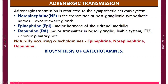Catecholamines are compounds which possess a catechol nucleus — a benzene ring with two adjacent hydroxyl groups — and an amine side chain. When you look at the structure of epinephrine, norepinephrine, and dopamine, you will find a benzene ring with two adjacent hydroxyl groups and an amine side chain.